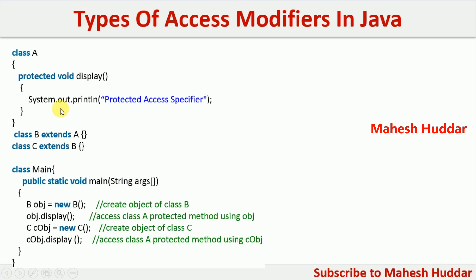In the third example, the display method is defined with protected access level. Because of this, we can access it in derived classes within a package or outside the package as well. Here, A is extended in B — B inherits the properties of A — and C inherits the properties of B. So display can be accessed with the help of an object of B or an object of C. obj.display where obj is an object of B works fine, and cObj.display where cObj is an object of C also works, because display is defined with the protected access specifier.